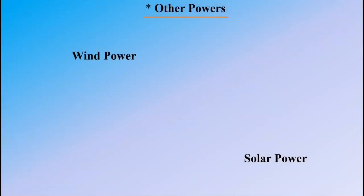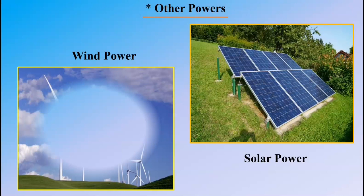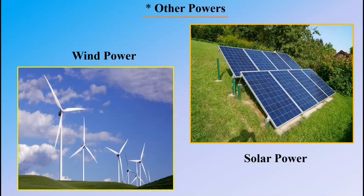Other powers. Solar power is generated by using energy from the sun. Energy from the sun is stored in solar panels, placed on rooftops usually, and is used to generate electricity. Wind power is generated through wind wheels. The blades turning in the wind work the turbines which generate power.